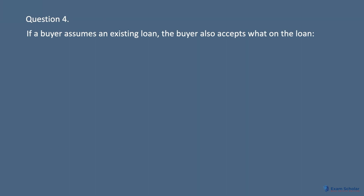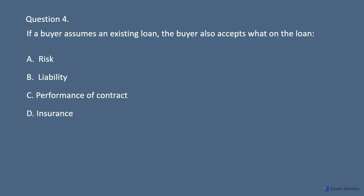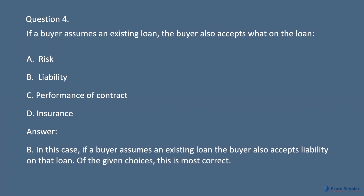Question 4. If a buyer assumes an existing loan, the buyer also accepts what on the loan? A. Risk. B. Liability. C. Performance of contract. D. Insurance. Answer: B. If a buyer assumes an existing loan, the buyer also accepts liability on that loan. Of the given choices, this is most correct.